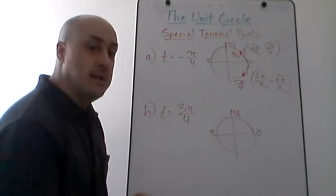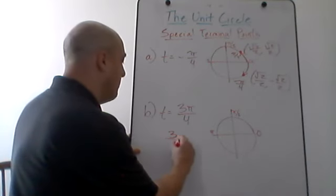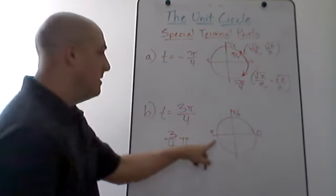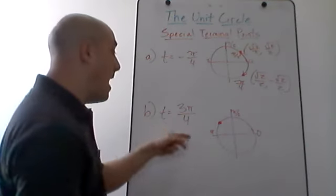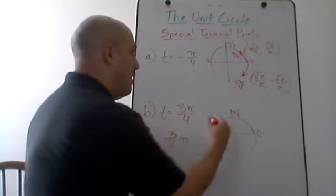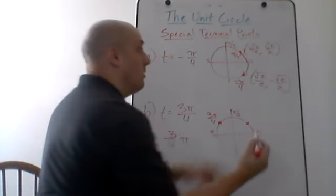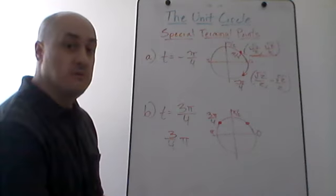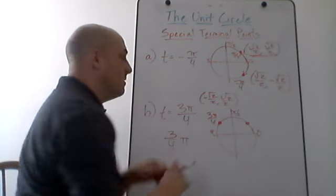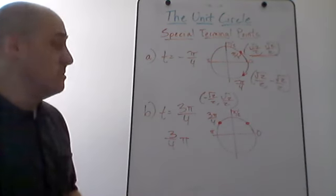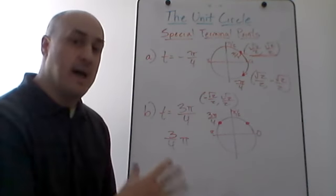For t = 3pi/4: think of it as three-fourths of pi, which is less than pi, so it's in the second quadrant. It's related to pi over 4, which has coordinates (√2/2, √2/2). In the second quadrant, x is negative and y is positive. So for 3 pi over 4, the terminal point is (-√2/2, √2/2). Make sure you check out the other videos for more examples like this.